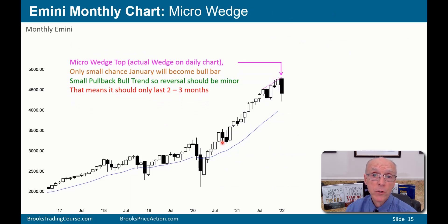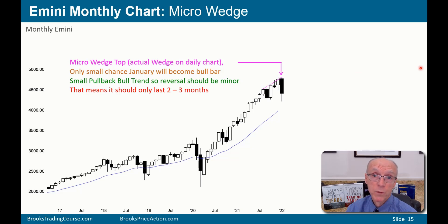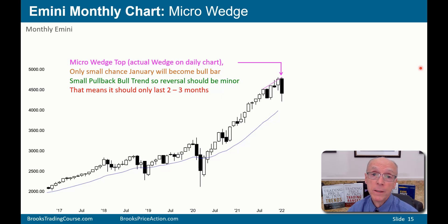During this trend we had bull bars, bear bars alternating — but now we're starting to alternate every single bar: bull, bear, bull, bear, bull, bear. We've had three pushes up with pullbacks — one, pullback, two, pullback, three. The bulls tried three times in a short period to extend the trend and failed all three times. That is a micro wedge. If you look at the daily chart, there's an actual wedge, and it often attracts profit taking. Since it's a micro wedge — a small pattern — the profit taking will probably also be small, maybe two or three months of sideways or down before the bull trend tries to resume.